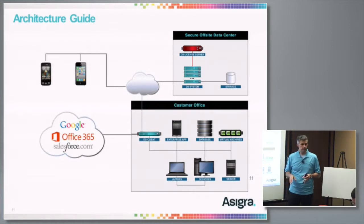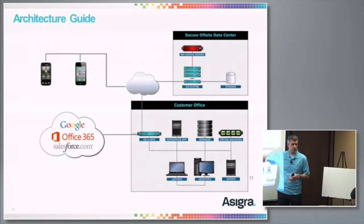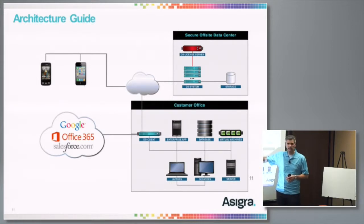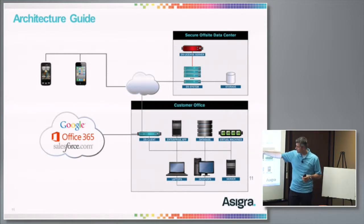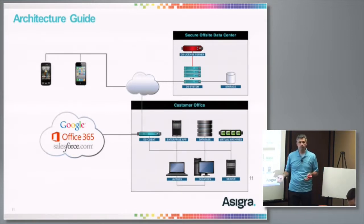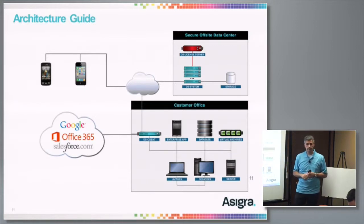We are an agentless architecture. Some of our service providers have an appliance and put the DS client on that. Some provide our DS client as a virtual image. However it gets behind the firewall, the DS client is the agent that goes out into the traditional enterprise — your file servers, your databases — it collects the data, does deduplication removing all the common files, compresses it, encrypts it, and sends it to DS system.